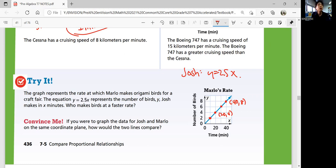That means Marlowe, it's Marlowe, not Mario, has 8 birds per 40 minutes. That means how many birds in a minute? 8 divided by 40. 0.2 birds per minute. What about Josh? 2.5 represents what? The slope. So that means he makes 2.5 birds per minute.